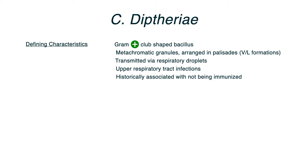Diphtheria is transmitted via respiratory droplets. It primarily causes pharyngitis and upper respiratory tract infections, along with some associated systemic symptoms. Historically, diphtheria is associated with either not being immunized or traveling to a region where vaccination rates are low, making it more likely for the bacteria to exist and be contracted.